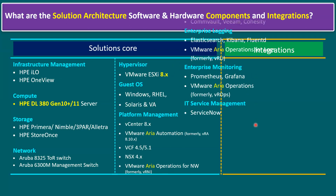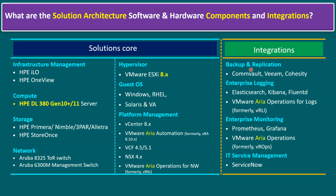Apart from core solution components, integration components include backup and replication — examples include Commvault, Veeam, and Cohesity. Organizations will definitely use one backup and replication tool. For enterprise logging, a centralized syslog management server can be Elasticsearch/Kibana/Fluentd or VMware Aria Operations for Logs. For enterprise monitoring, Prometheus/Grafana or VMware Aria Operations (formerly vROps — vRealize Operations Manager). For IT service management, one example is ServiceNow, which helps with service requests, change requests, and incident management.